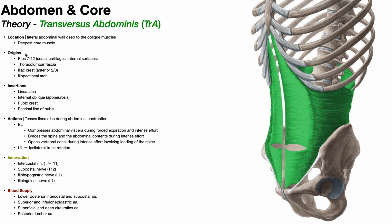Looking at the origins of this muscle, it originates from ribs 7 through 12, specifically the internal surfaces of the costal cartilages — you can actually see some of that origin right here. It also originates off of the thoracolumbar fascia, which will be extremely important when we discuss the clinical importance of this muscle. Additional origins include the iliac crest, specifically the anterior two-thirds of it, and the iliopectineal arch.